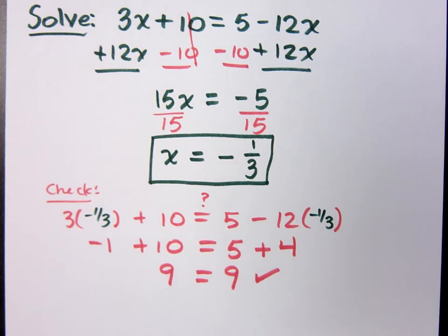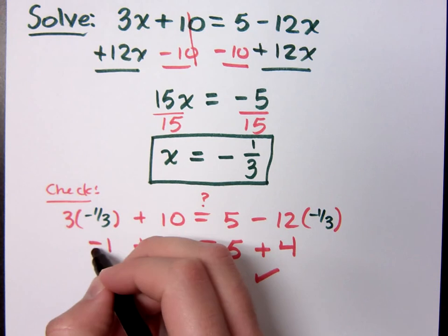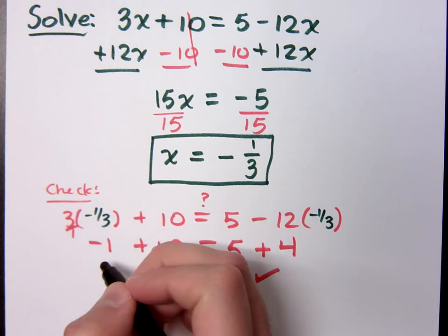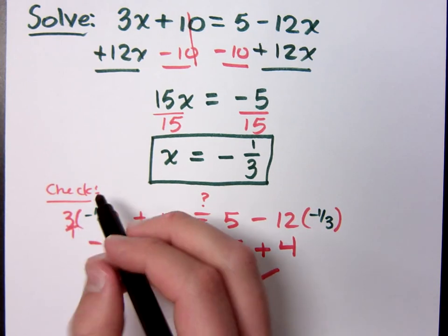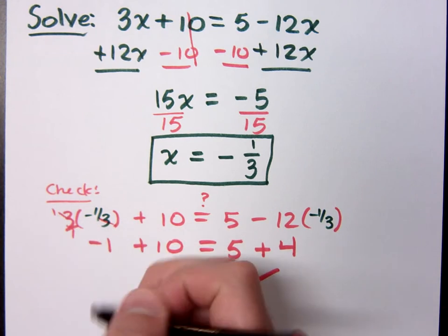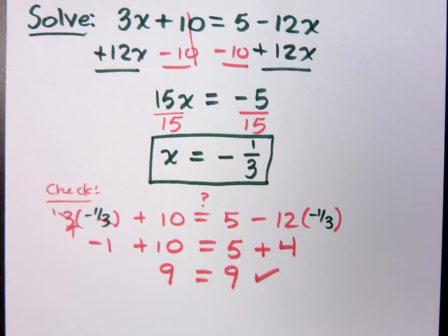This may be a stupid question, but... Don't ever preface a question like that. How did you get negative one? Positive times negative is negative. Okay. Zero over one. So, the three is reduced to give you a one. One times one is one.